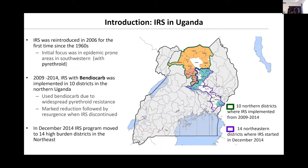As a background, IRS was reintroduced in Uganda in 2006, the first time since the 1960s when it was a method of control. The initial focus was in southwestern Uganda and the spray was with pyrethroids. In 2009 to 2014, IRS moved to northern Uganda in 10 districts with bendiocarb, chosen because of non-pyrethroid resistance in that area. IRS in those 10 districts was associated with significant reductions in malaria burden.